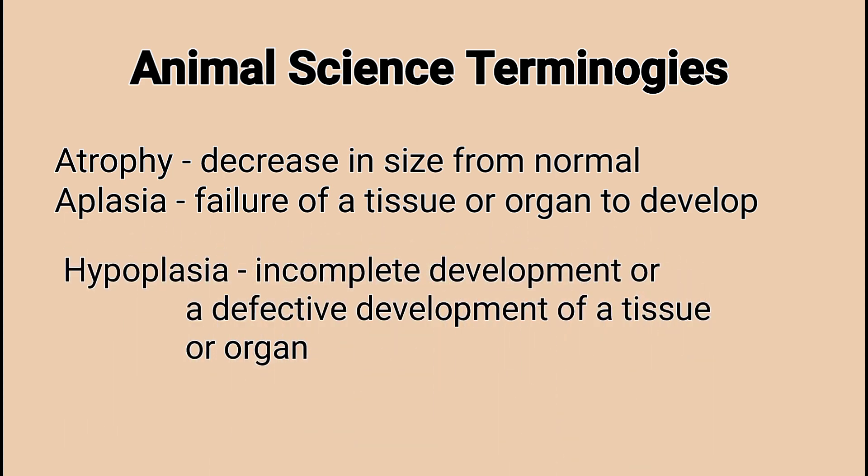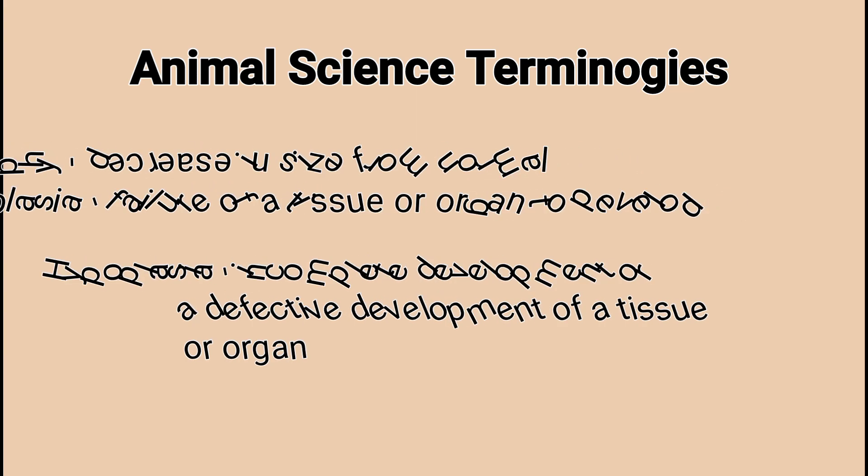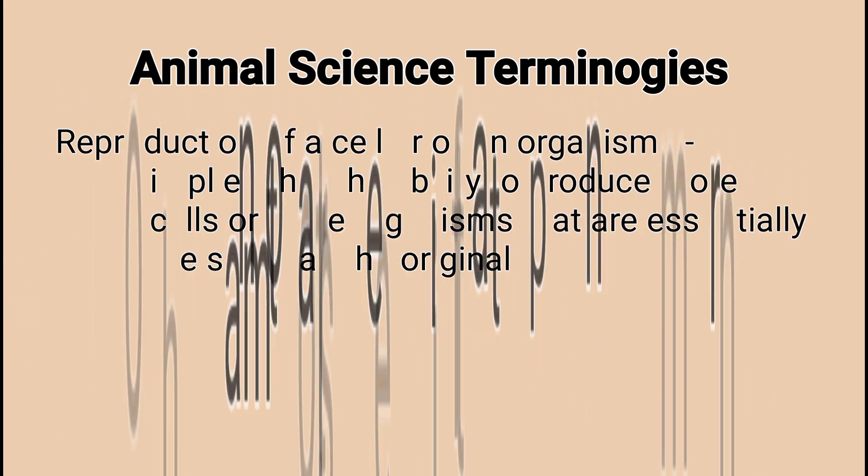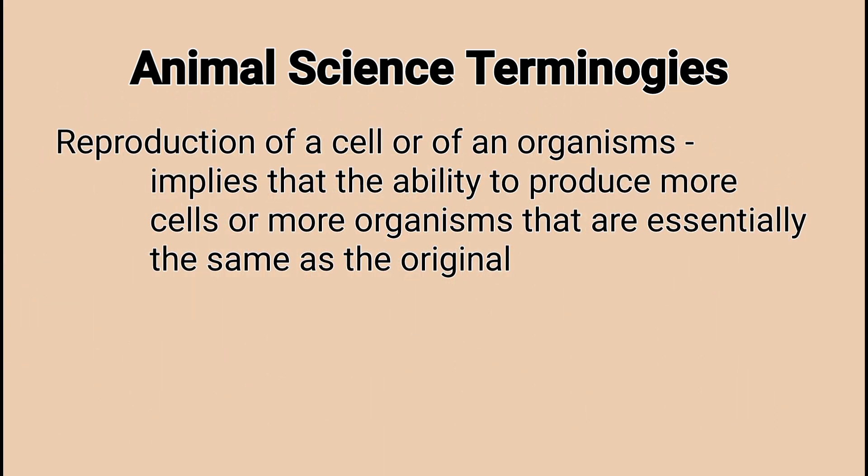Hypoplasia: incomplete development, or defective development of a tissue or organ. Reproduction of a cell or of an organism implies the ability to produce more cells or more organisms that are essentially the same as the original.